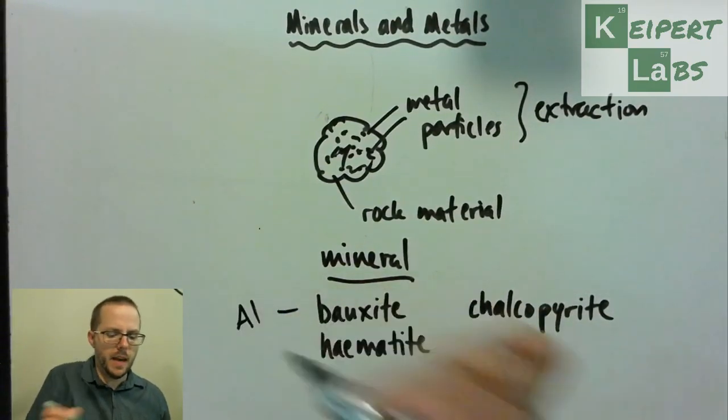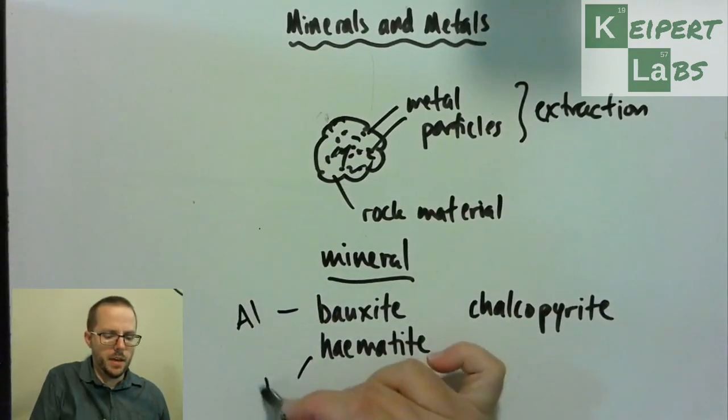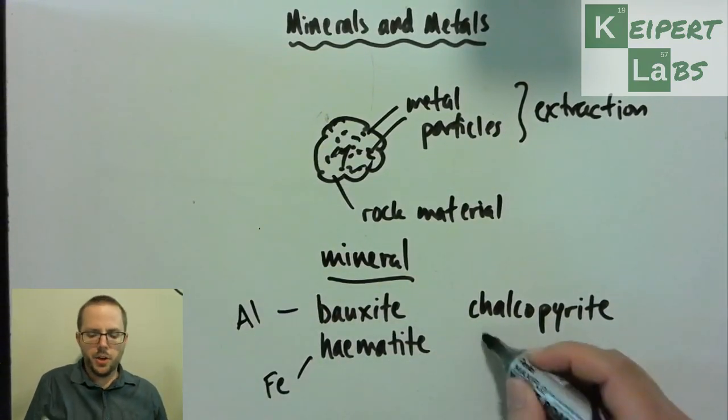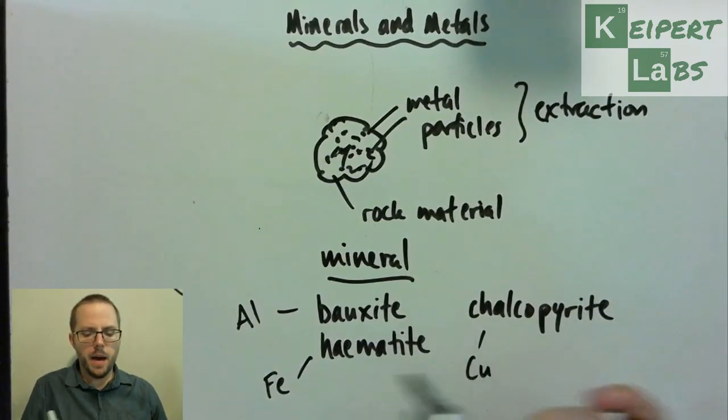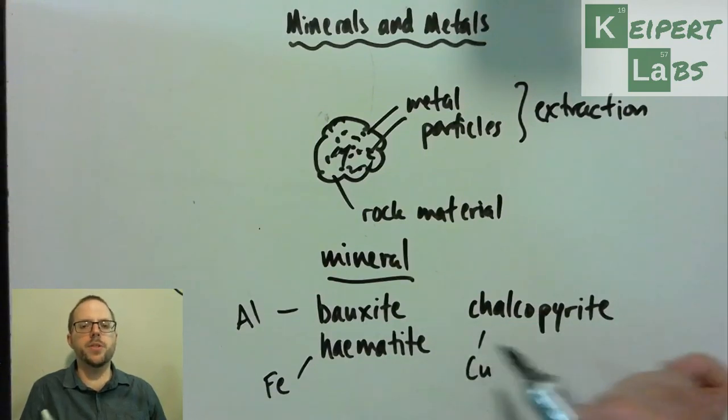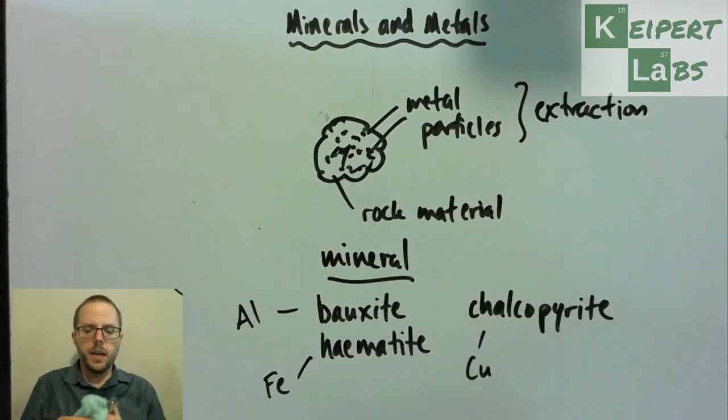So bauxite contains aluminium, hematite contains iron, chalcopyrite contains copper. They're all examples of substances that we want to extract those metals from.